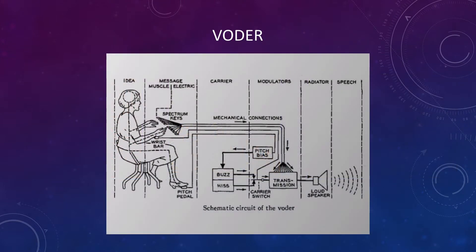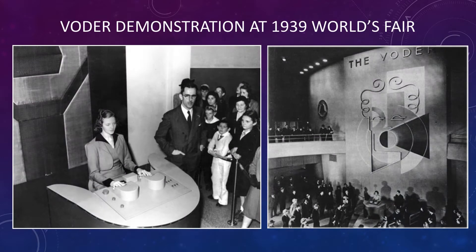The Voder. The information gathered from the vocoder led to the development of the Voder — a Voice Operating Demonstrator — in the 1930s. The Voder was the first electronic device that could synthesize speech, and it was introduced to the public at the 1939 World's Fair.